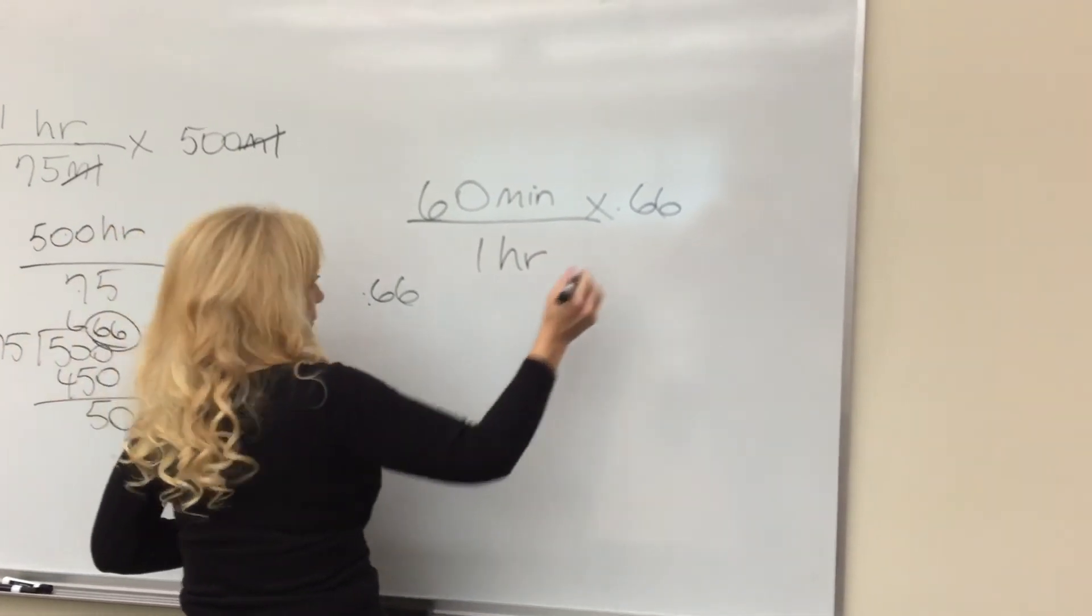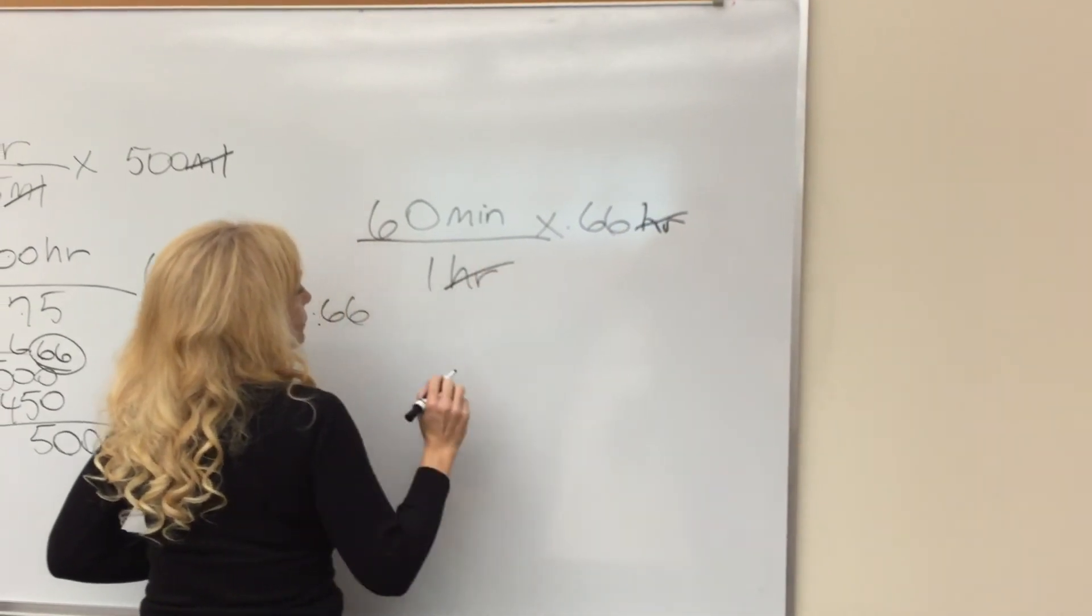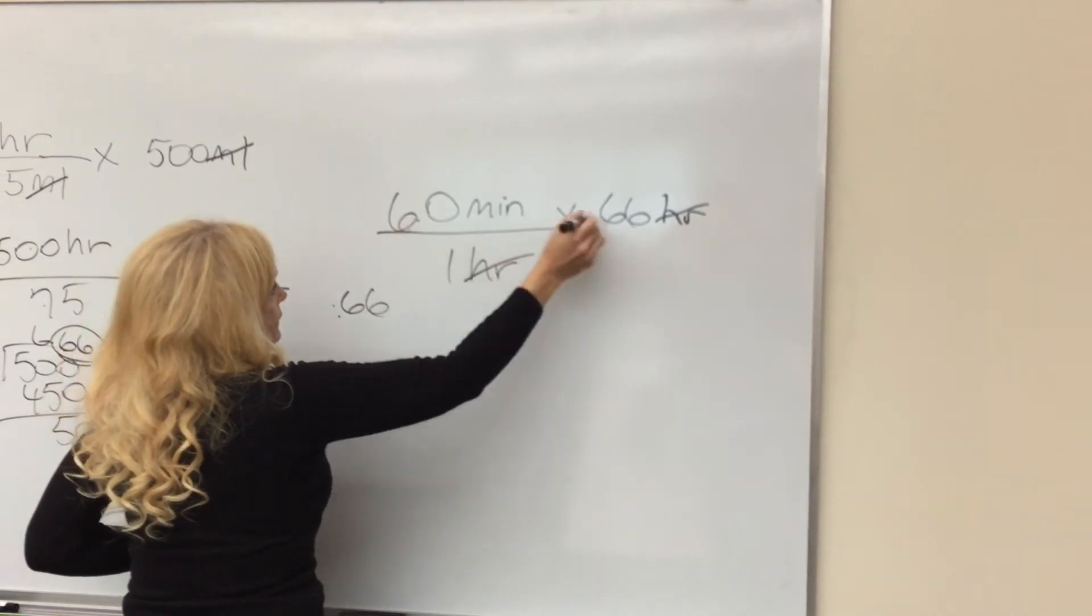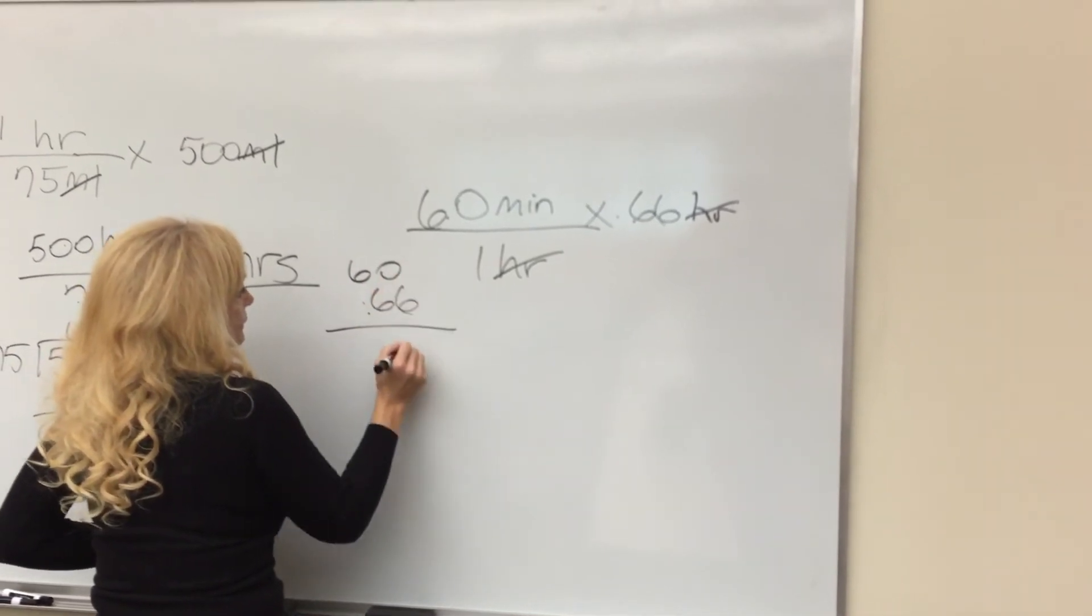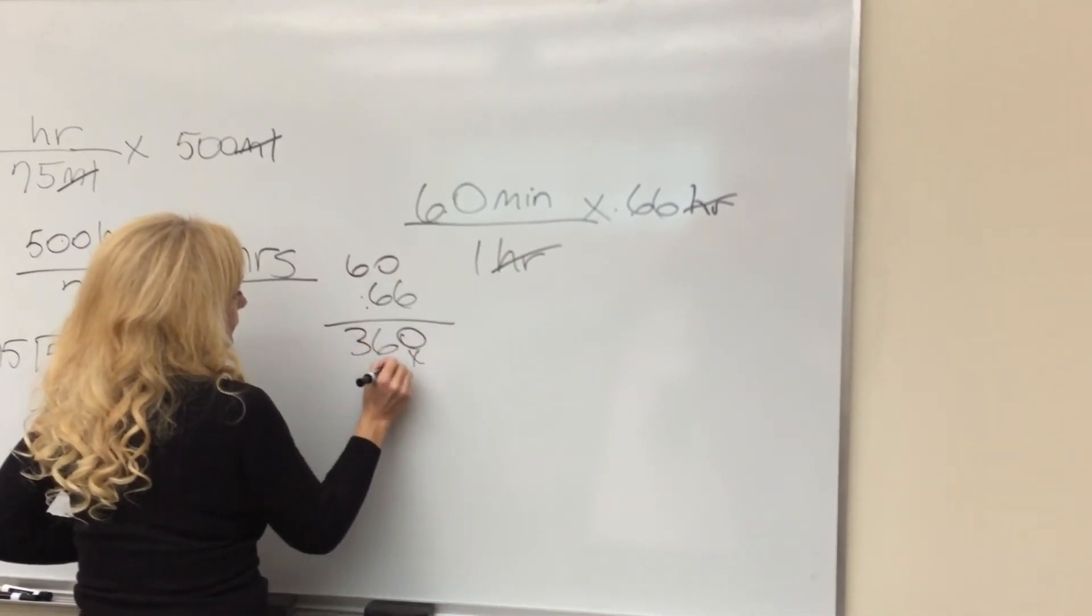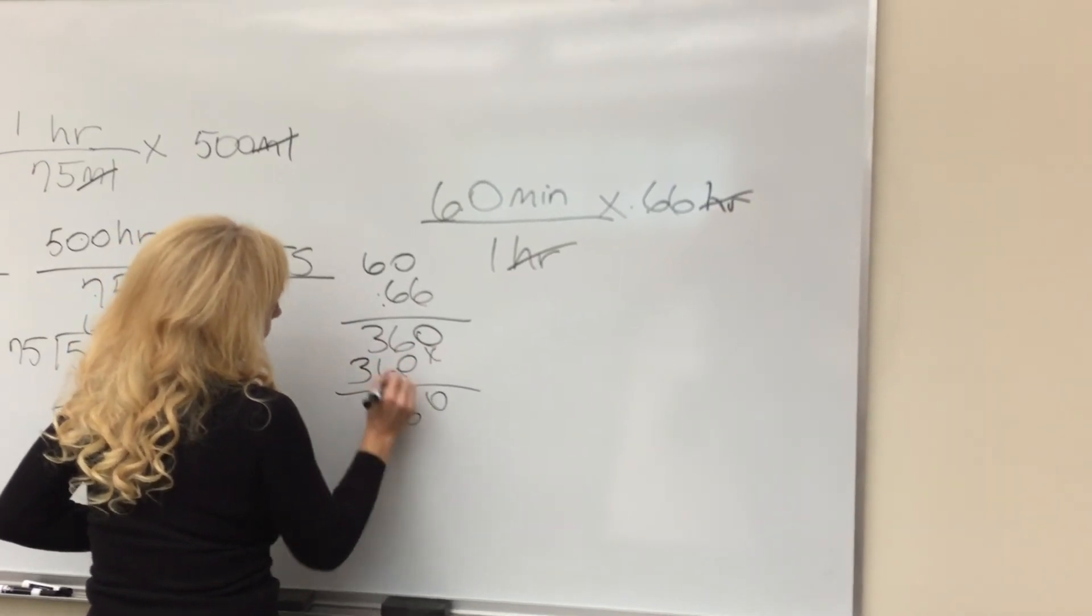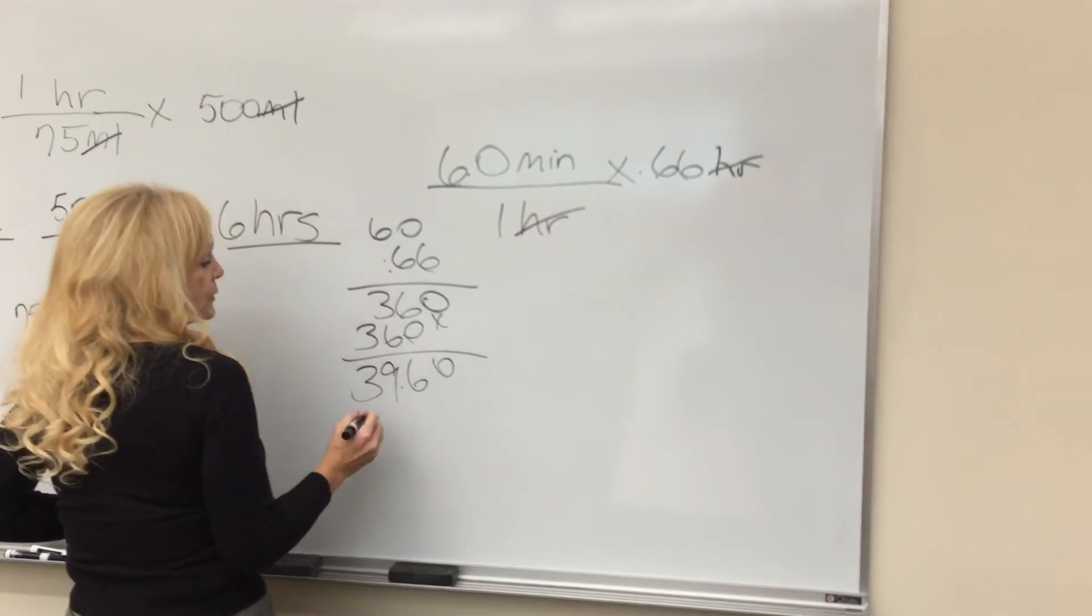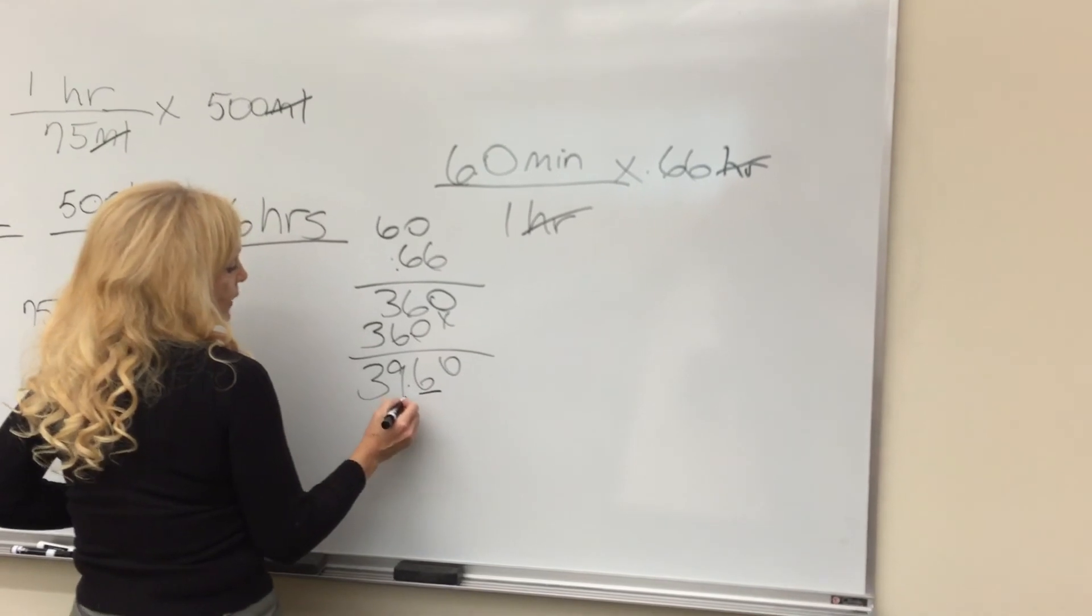We're going to eliminate the hours, and then we're going to multiply 60 times 0.66. So we have 60 times 0.66, and it comes out to 39.6. To round this, since this is above five, you would need to round this up, so this will be 40 minutes.